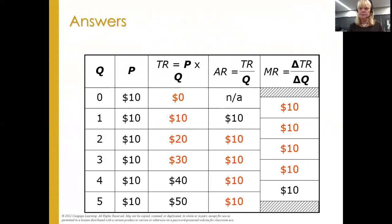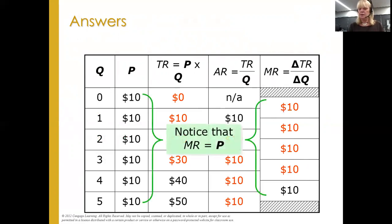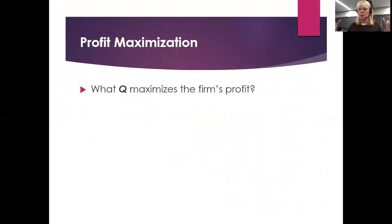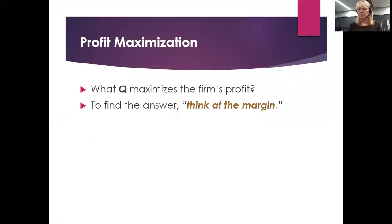Marginal revenue equals price in this market structure — always. So how do we maximize profit? What quantity gives the firm the most overall profit — not the most profit per unit, but the most overall? Remember, profit is total revenue minus total cost. To find that answer, we think like an economist: think at the margins.